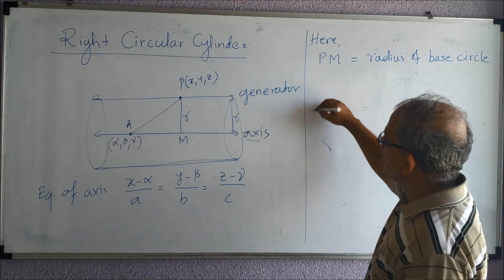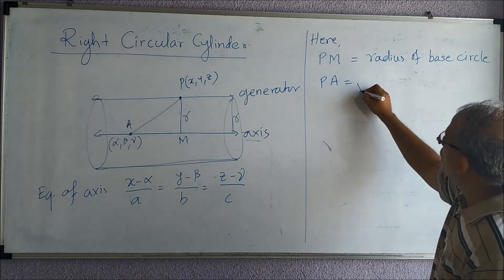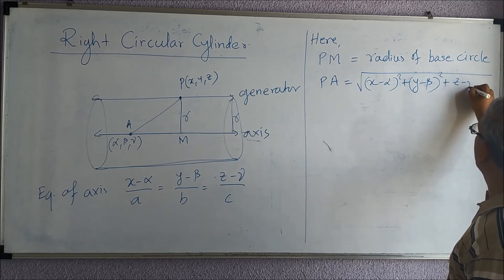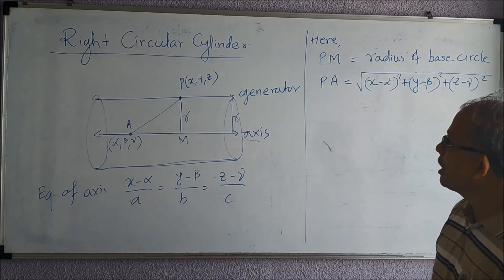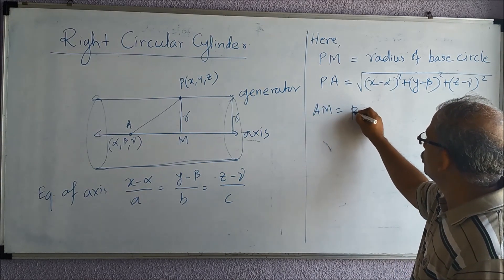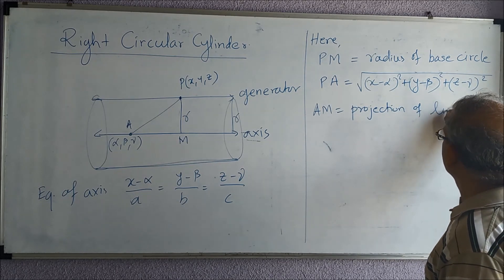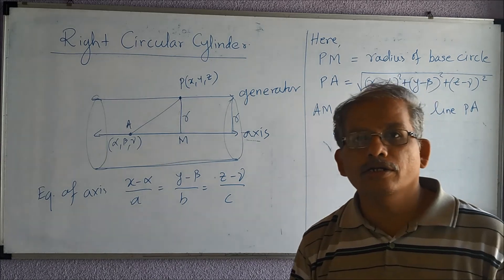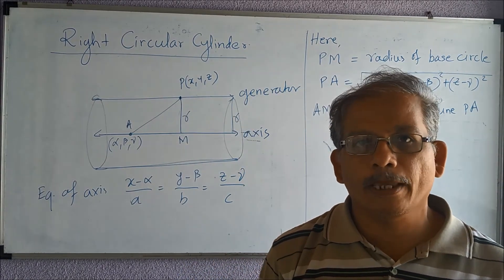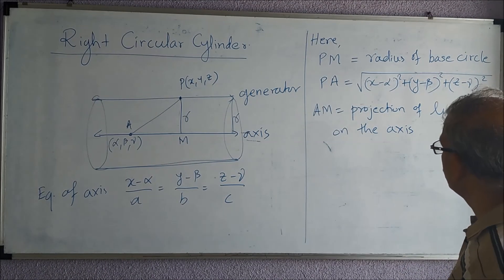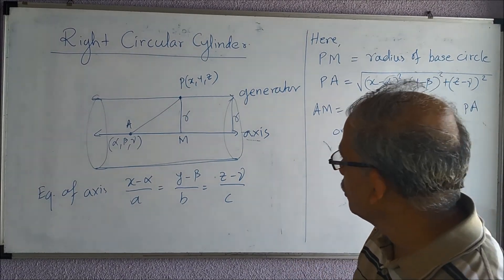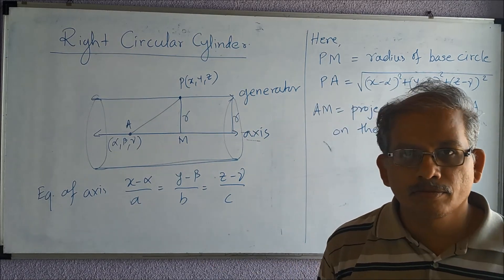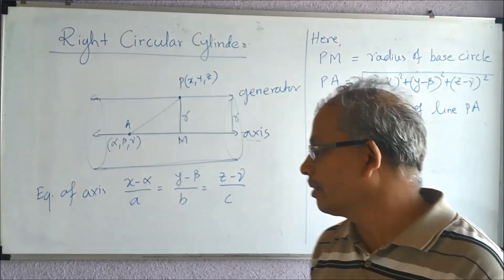The distance PA can be calculated using the distance formula: PA = √[(x − α)² + (y − β)² + (z − γ)²]. AM is the projection of line PA onto the axis. To find this projection, we need the direction cosines of the axis. From the direction ratios a, b, c we obtain the direction cosines.